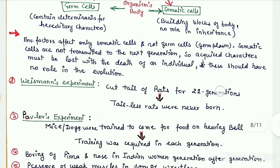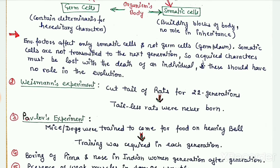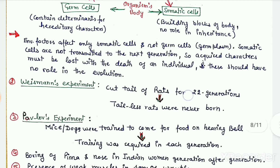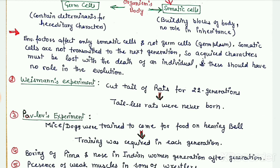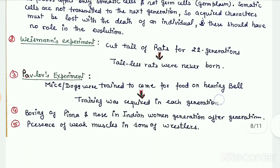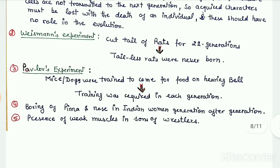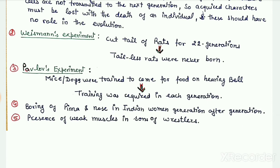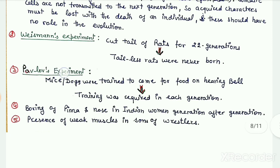To support this statement, Weismann performed an experiment in which he cut the tails of rats continuously for 22 generations. If Lamarck's theory had been absolutely true, tailless rats should eventually have been born, but tailless rats were never born. Similarly, in Indian women, the piercing of the nose and ears is performed generation after generation, yet no babies are ever born with already-pierced ears or noses — further contradicting Lamarckism.